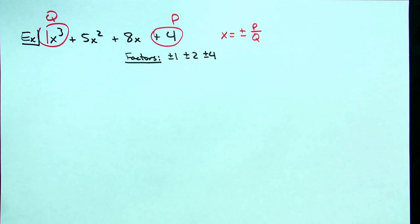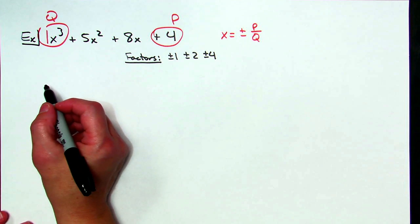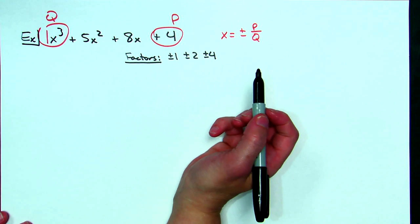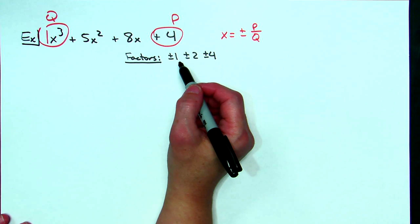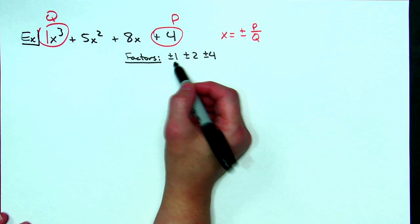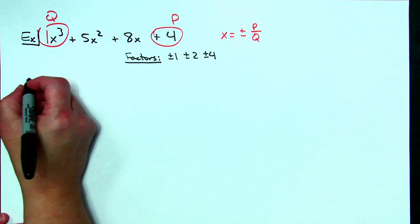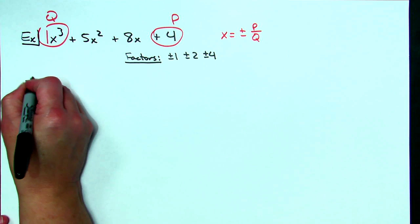Now I have to find one of those that actually turns out to be a root or a zero to the function so I'm going to apply synthetic division. I'm going to randomly pick one of those, let's just try maybe say negative one let's try and see if it works.